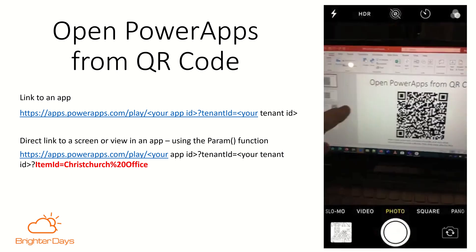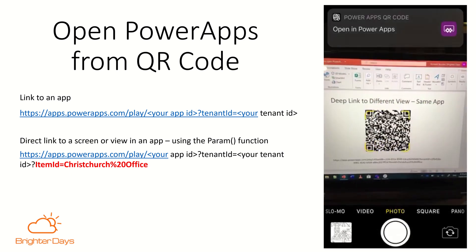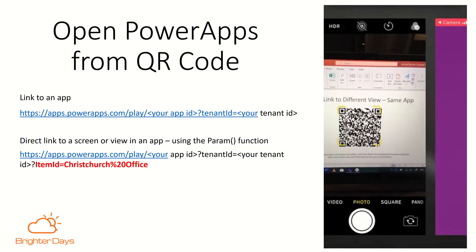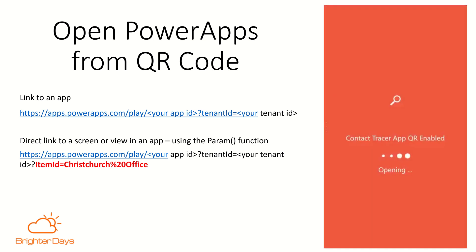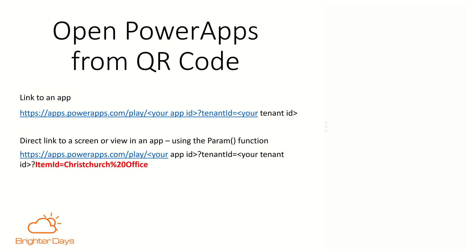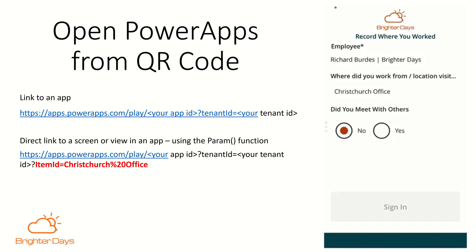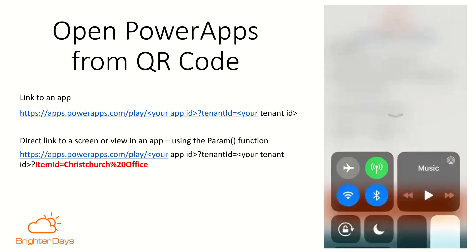Here we go — so this one is a QR code to the same app, but the URL is slightly different. We'll open in PowerApps on my phone, and rather than going to the home screen — apologies for low battery — we'll go straight to the screen where I'm logged in. It knows my name, it knows my location — Christchurch office — and I can sign straight in.